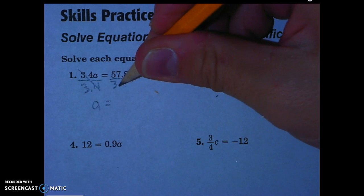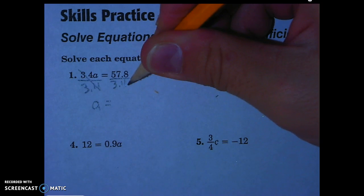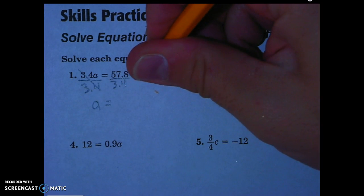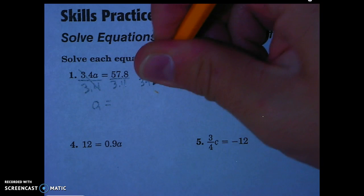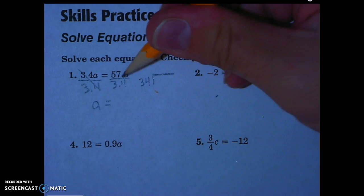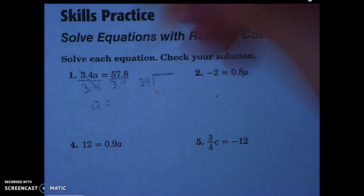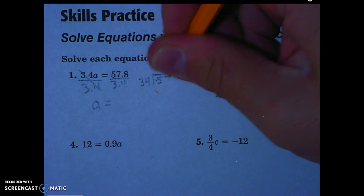Instead of making 3.4, I'm going to move my decimal place once to the right. So, for the division, it will be 34 going into, I'll move the decimal once to the right in this number too, 578.